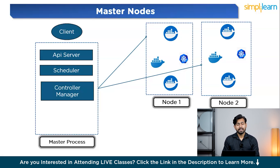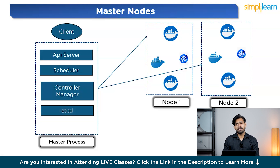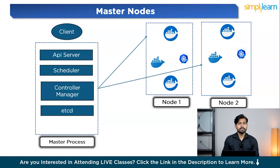The final component is etcd, also called the cluster ring. etcd is a database that stores all the data about the Kubernetes cluster. It is often referred to as the brain of the cluster because it keeps track of everything, including which apps are running, where they are running, and the overall state of the cluster. etcd is a distributed key-value store, meaning it can store data across multiple machines and ensure that it is highly available and fault tolerant. The entire Kubernetes system relies on etcd to know the current state of the cluster. For example, if you deploy a new app, Kubernetes stores information about the app — like its configuration, location, and state — in etcd. If something happens to the cluster, Kubernetes can recover the current state from etcd.